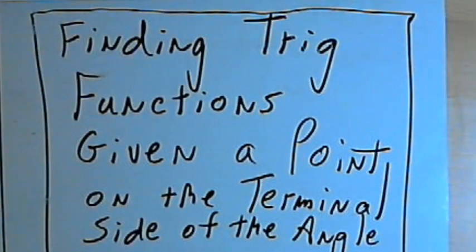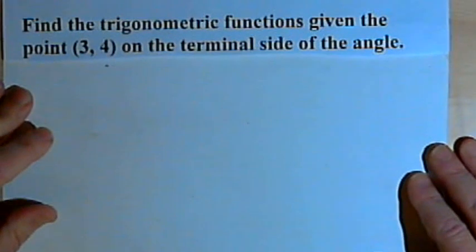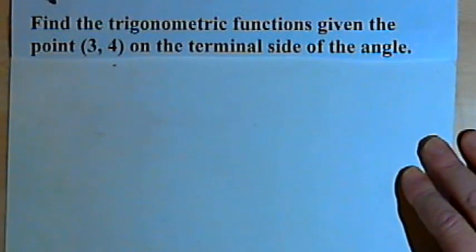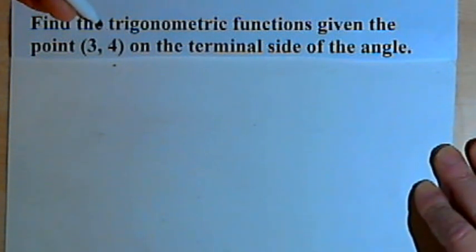This video is provided as supplementary material for courses taught at Howard Community College. In this video I want to show how to find the six trigonometric function values when you're given a point on the terminal side of the angle. Let's start with a fairly simple problem to get the concept down, and then we'll go on to a slightly harder one. Find the trigonometric functions given the point (3, 4) on the terminal side of the angle.